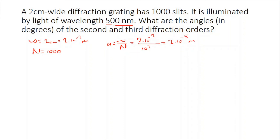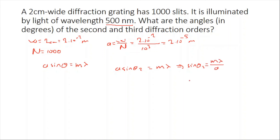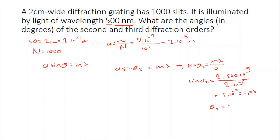That is a really small length. Our formula for diffraction grating is a sine theta equals m lambda. For the second diffraction order: a sine theta two equals m lambda, so sine theta two equals m lambda over a. Substituting: sine theta two equals 2 × (500 × 10⁻⁹) divided by (2 × 10⁻⁵), which gives 5 × 10⁻² or 0.05. Therefore theta two is approximately 2.87 degrees.